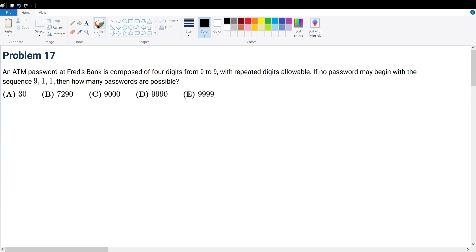Problem 17. An ATM password at Fred's bank is comprised of four digits from 0 to 9. So this is our password with repeated digits allowable. Let's circle that because that's very important. If no password may begin with the sequence 9-1-1, then how many passwords are possible?